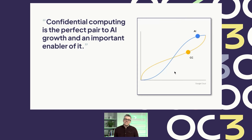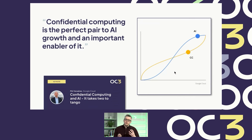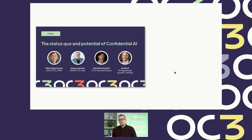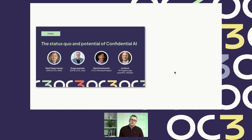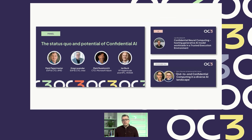Maybe more exciting is AI. We have a keynote today by Phil Venables, the CISO of Google Cloud, where he will detail how confidential computing makes AI better and enables new exciting applications. To complement this, we have a panel with Mark Papermaster, Greg Lavender, Mark Rosinovich, and Ian Buck, discussing the current state and potential of confidential AI — and spoiler alert, the potential is huge. We also have a series of technical talks around AI with very interesting new developments and applications.